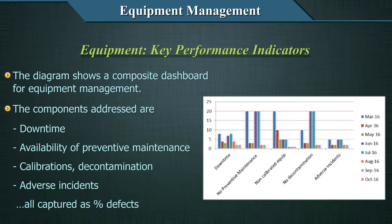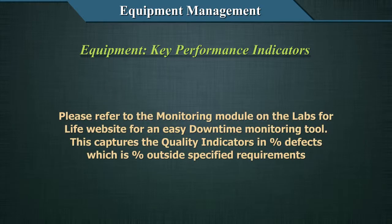The dashboard shown here provides a composite view for equipment management. The components addressed are downtime, availability of preventive maintenance, calibrations, decontamination, and adverse incidents — all captured as percent defects. Please refer to the monitoring module on the Labs for Life website for an easy downtime monitoring tool, which captures quality indicators as percent defects — that is, percent outside the specified requirements.